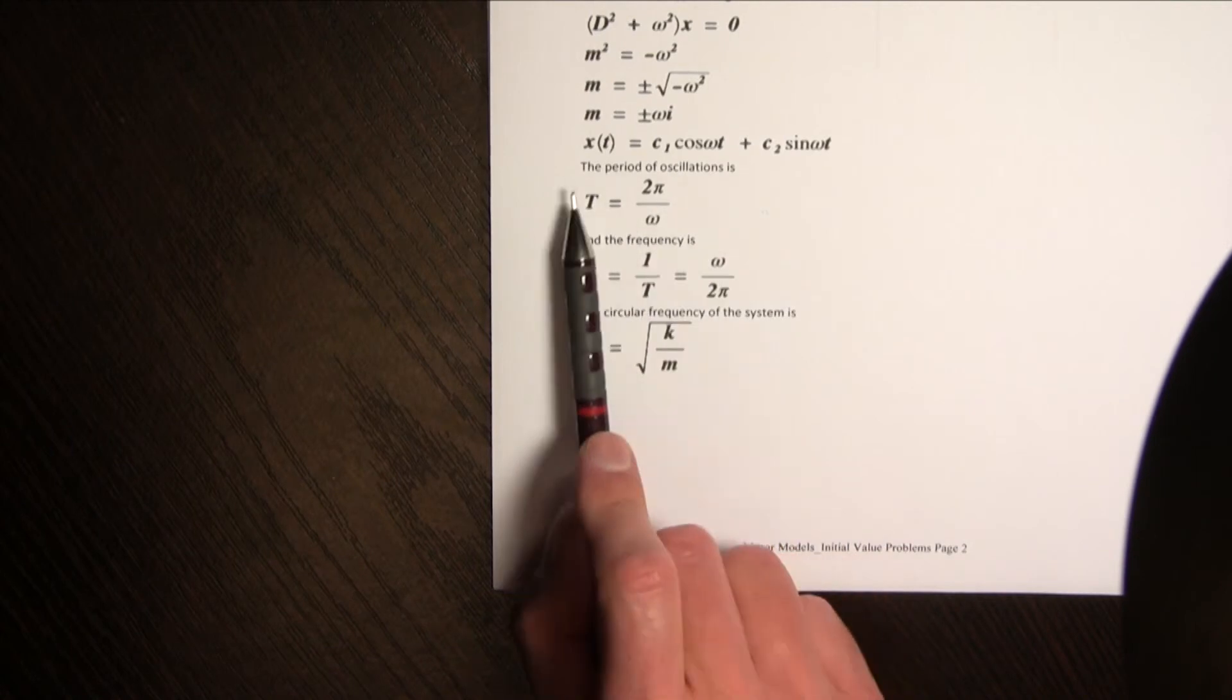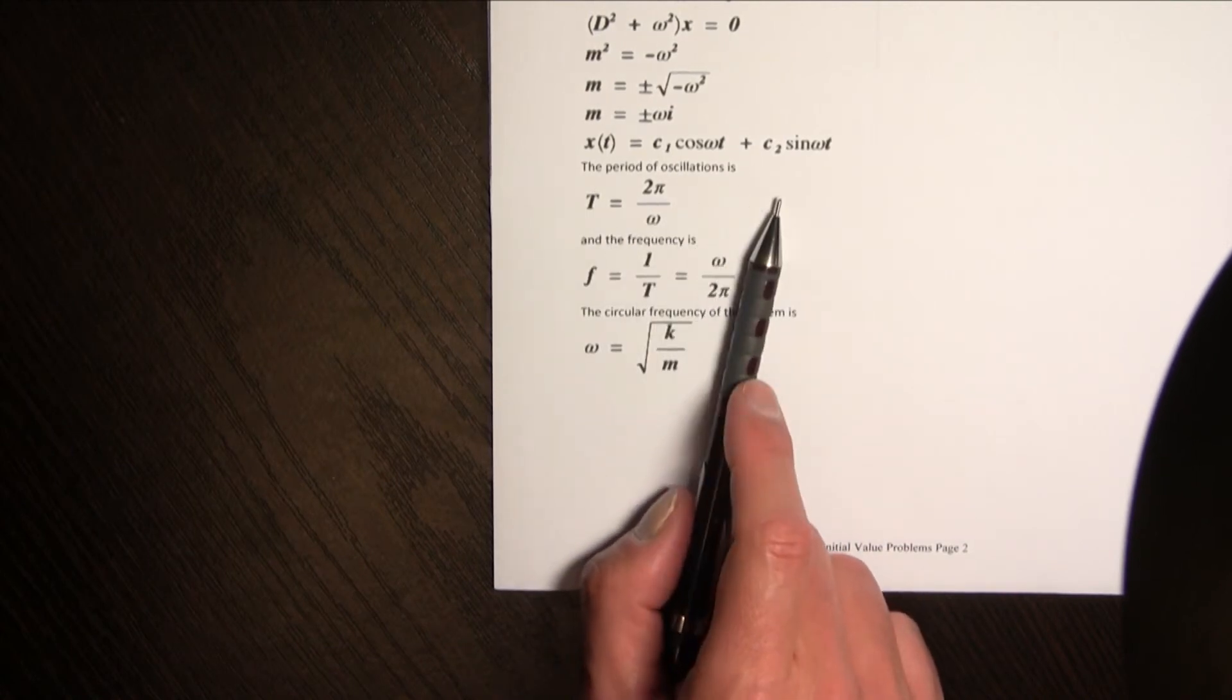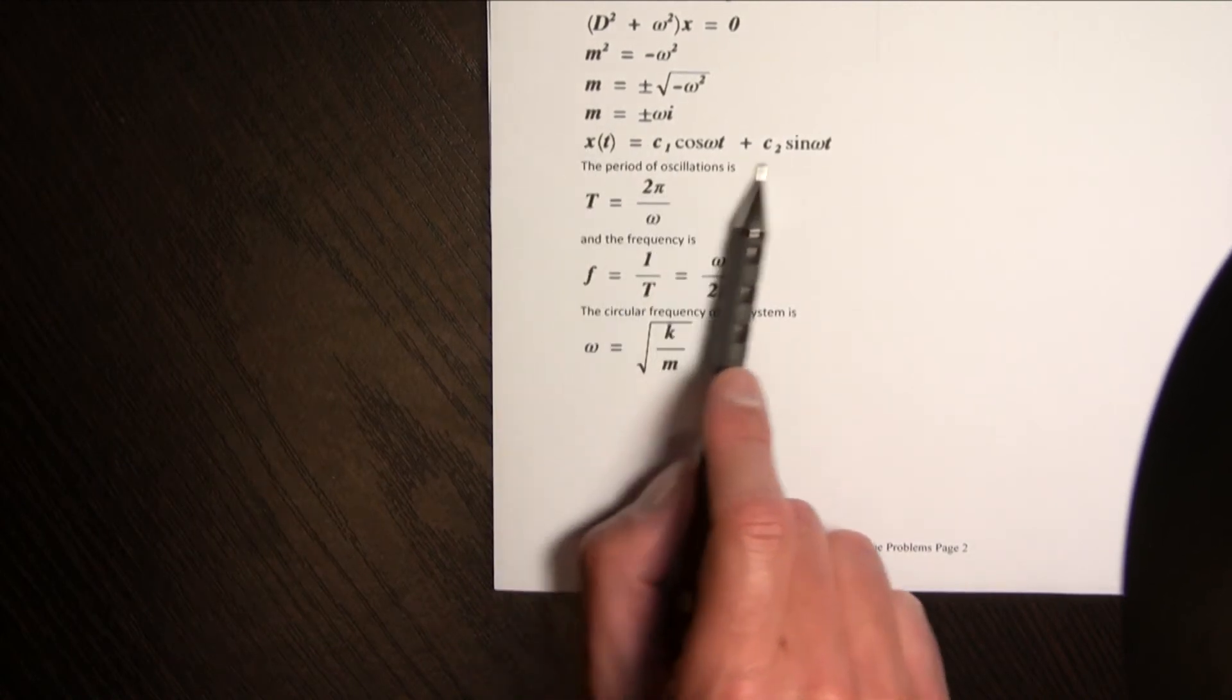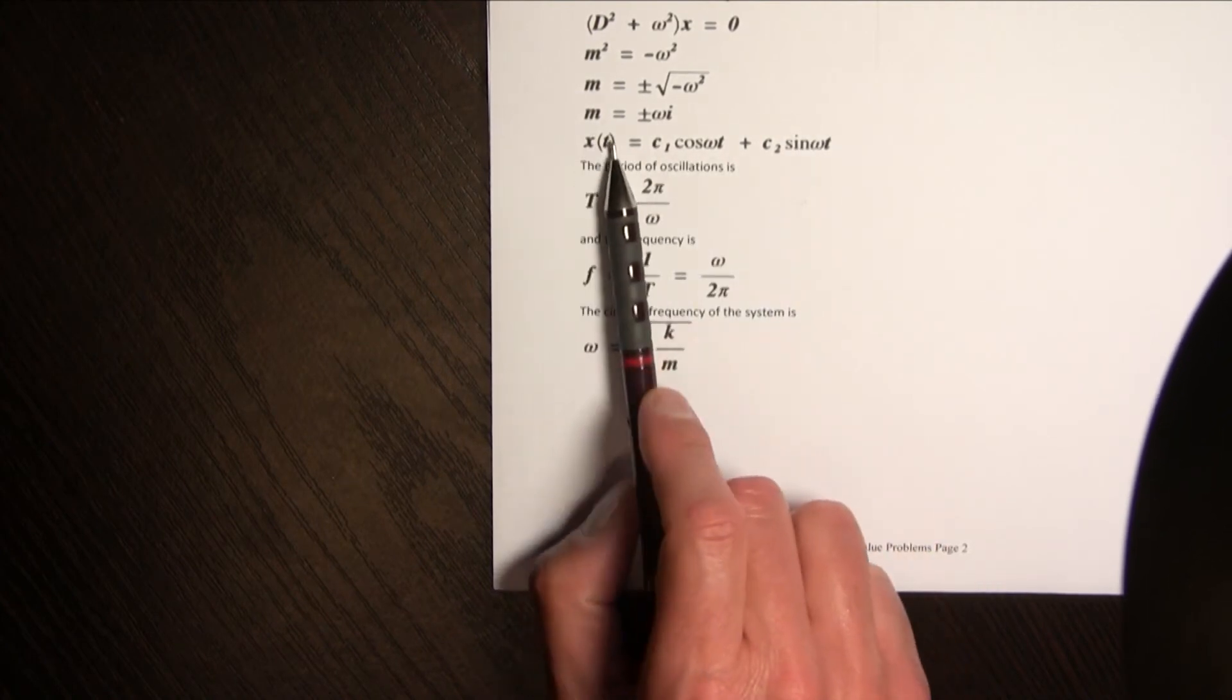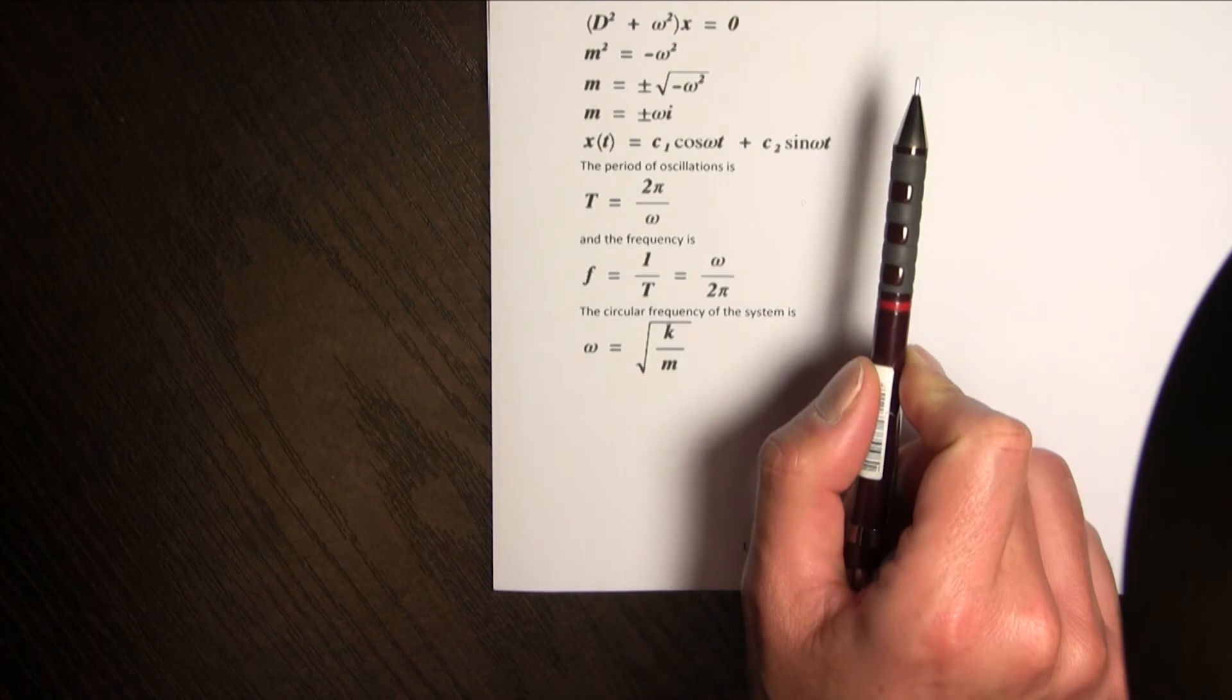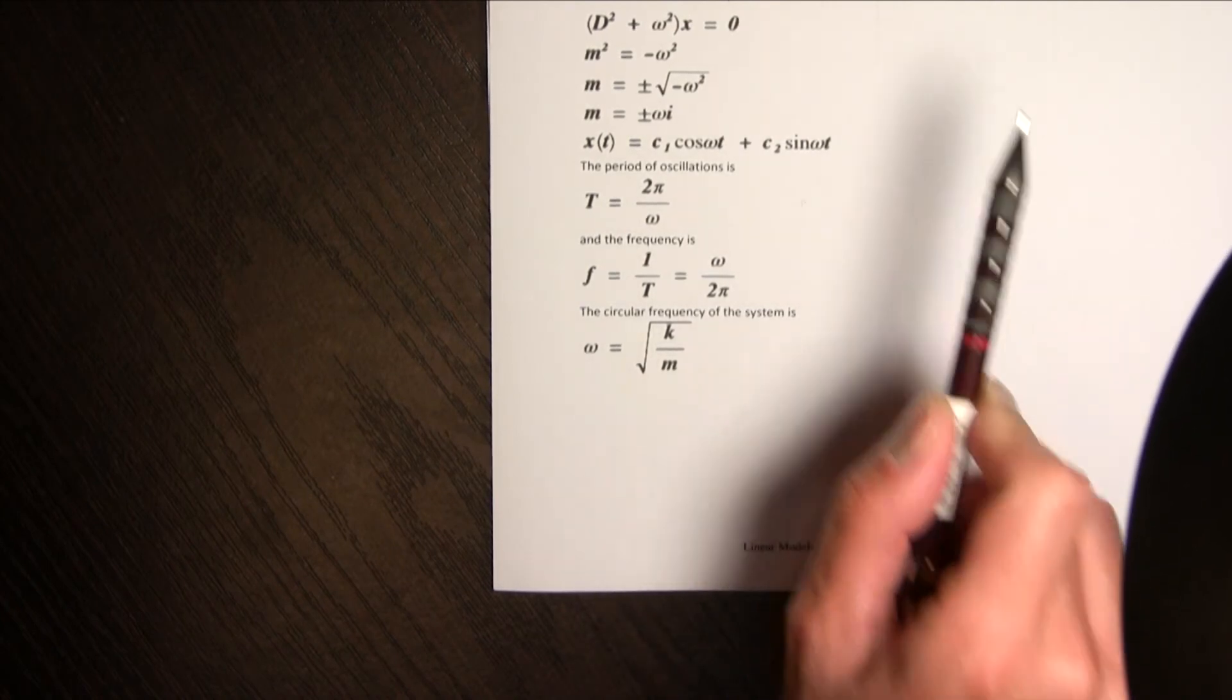Now the period of oscillation, so it's beautiful, listen as much as now we have now we have an equation for x at any time t I can work out exactly where this mass will be.